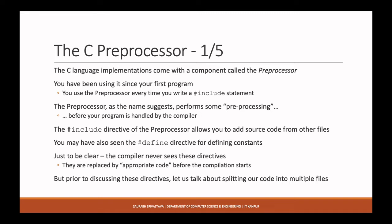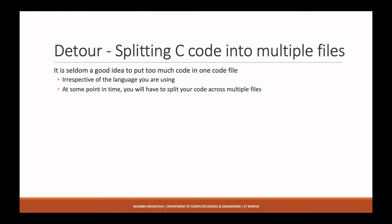Before we go ahead, let's take a detour — we'll come back to it towards the end of the lecture. This detour is about splitting our code into multiple files. We discussed it briefly when we were discussing static and global variables, but we didn't go into more detail. The issue is that it is normally not a good idea to put all your code inside just one C file.